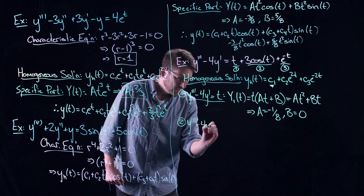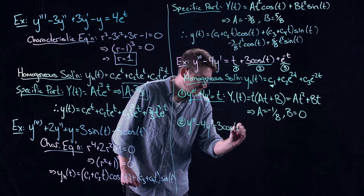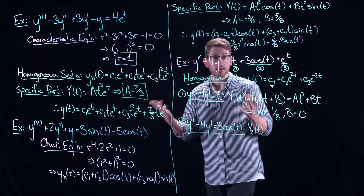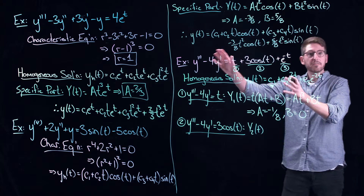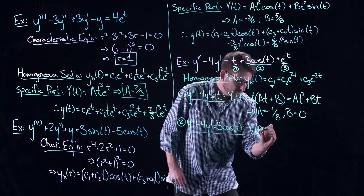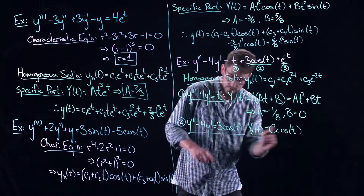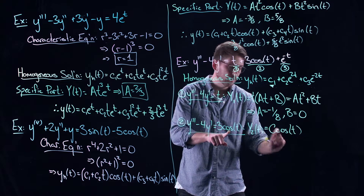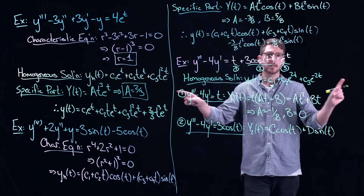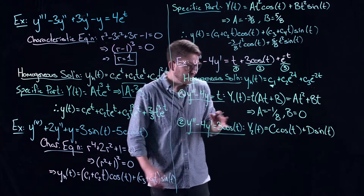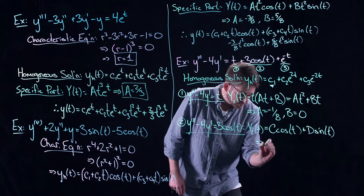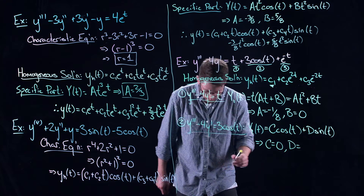For y''' - 4y' = 3cos(t): cosine is not a solution to the homogeneous equation, so I don't have to worry about multiplying t's in. We use Y = Ccos(t) + Dsin(t) — we need both because sine and cosine swap under derivatives. Working through it, C = 0 and D = -3/5, so the specific part for this piece is -(3/5)sin(t).